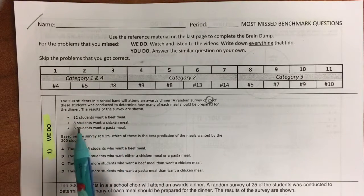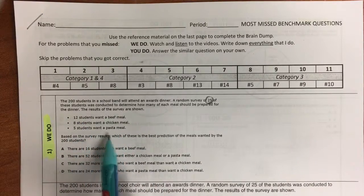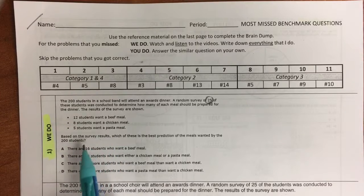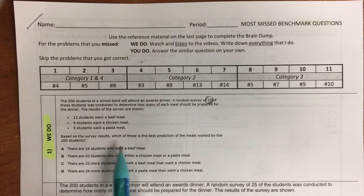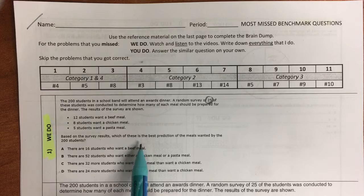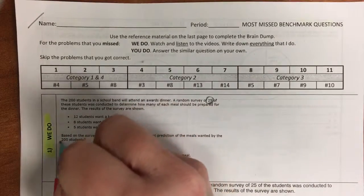The results of the survey are shown right here. 12 students want beef, 8 students want chicken, 5 students want pasta. Based on the survey results, which of these is the best prediction of the meal wanted by the 200 students?